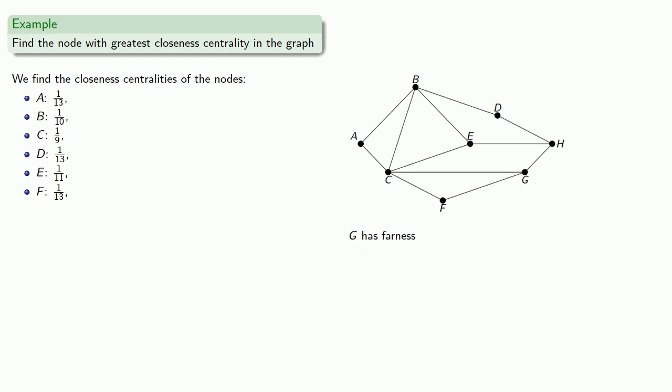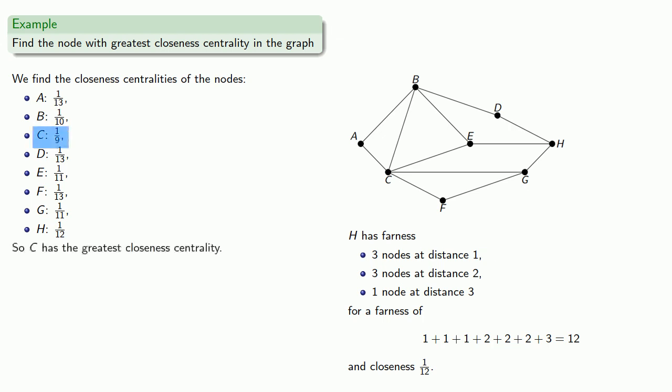We'll compute the farness of G. And finally, H. And we see that of all of these values, C has the greatest closeness centrality. Remember, the smaller the denominator, the larger the fraction.